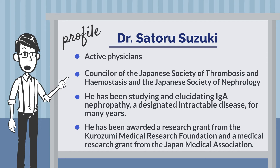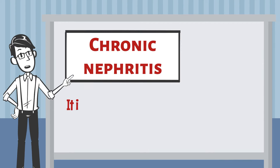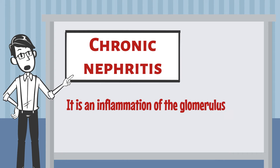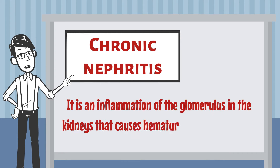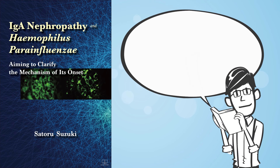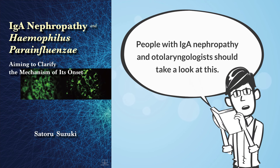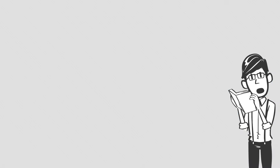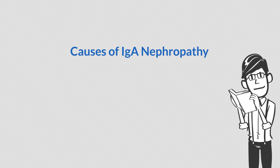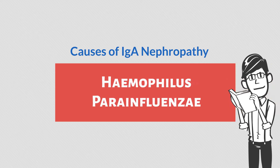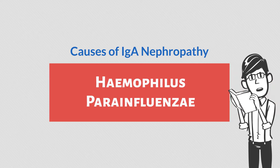IgA Nephropathy is a chronic nephritis that causes inflammation of the glomeruli in the kidney, resulting in hematuria and proteinuria. This video is a must-watch for those who suffer from IgA Nephropathy and for otolaryngologists who deal with kidney and tonsil diseases. The bacteria that Dr. Suzuki says causes IgA Nephropathy is Haemophilius para-influenzae.